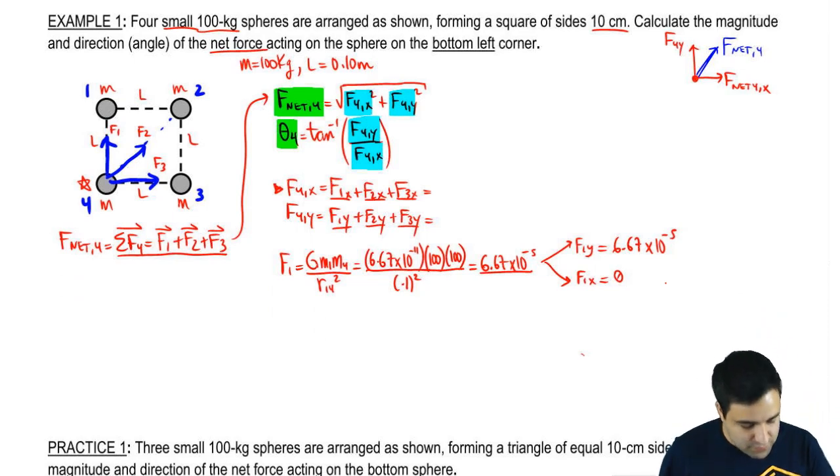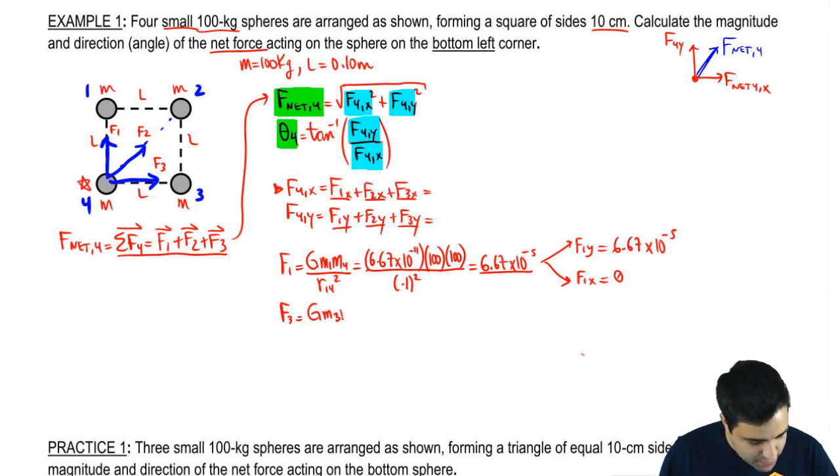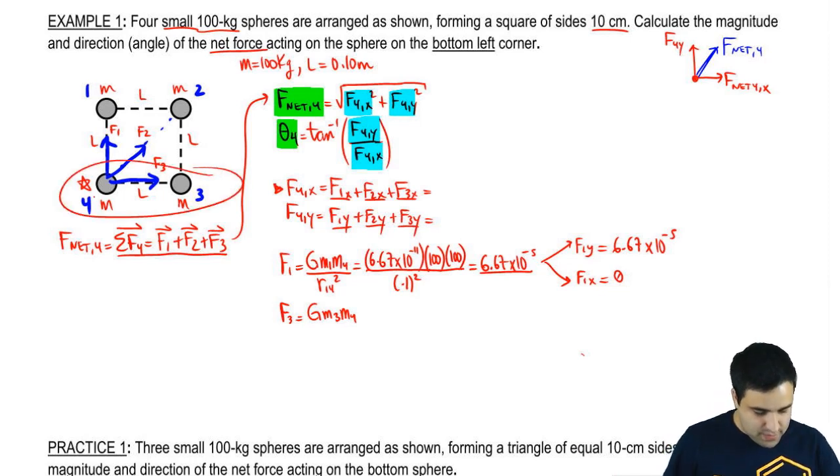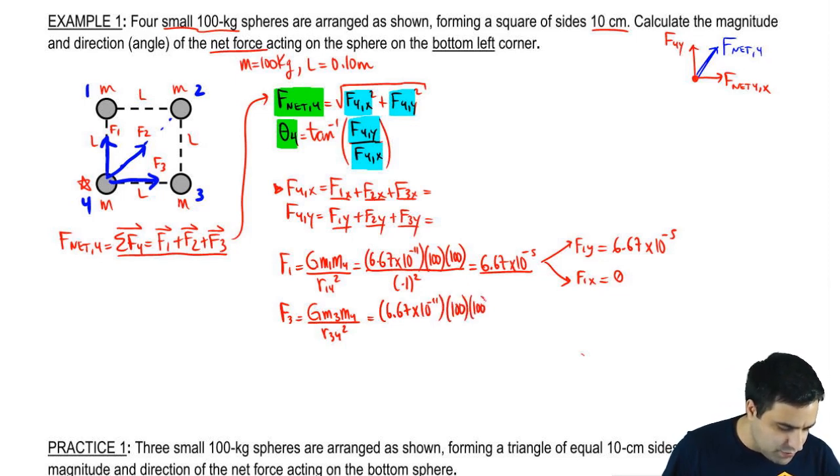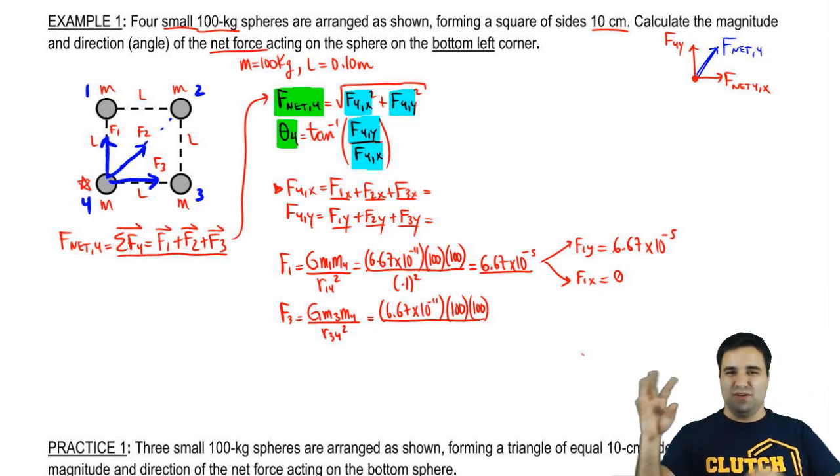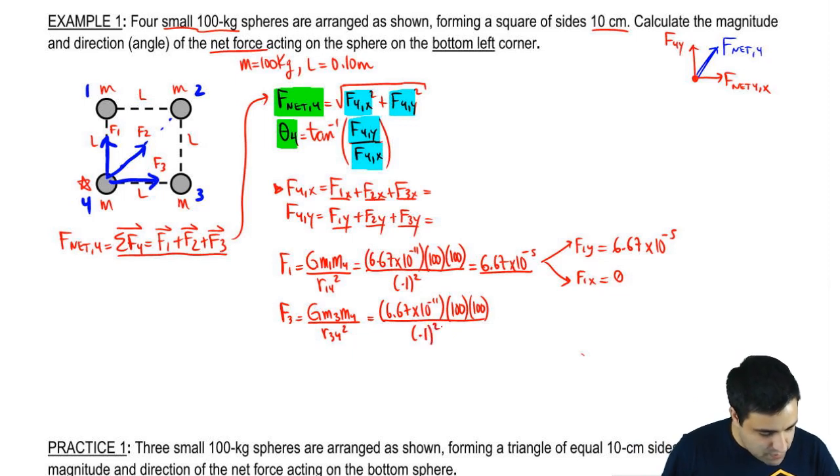So now let's find F3. Actually, let's do F3 first because it's going to the right over here. F3 will be G, M3, M4, divided by the distance between 3 and 4 squared. And all these numbers are exactly the same, you might notice. The distance is still 0.1. That way, if all the numbers are the same, this is easier to work out, it's the same exact number, so you get the same exact number here, 6.67 times 10 to the negative 5th.